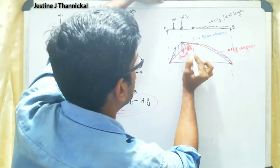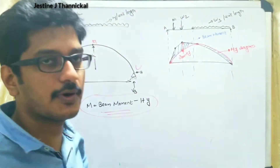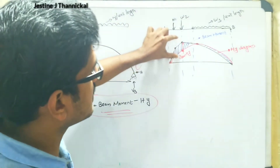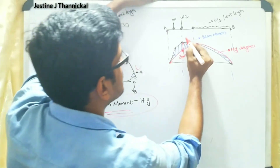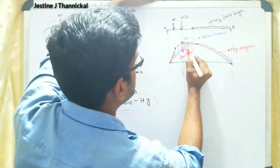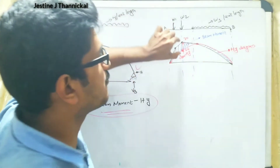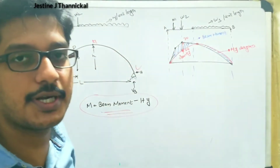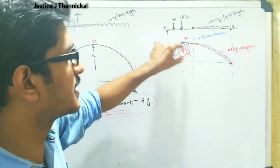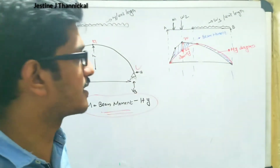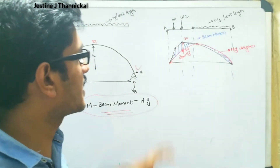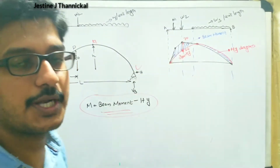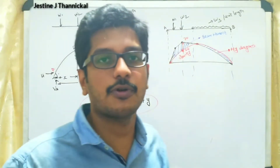The shaded portion gives the value at point D. You have to subtract this much. If the beam moment value is 30 and the HY value is 20, then the bending moment at point D will be 30 minus 20, equal to 10. This is the way for drawing the bending moment diagram for an arch.